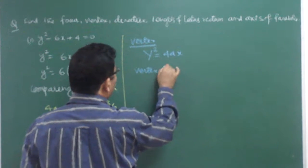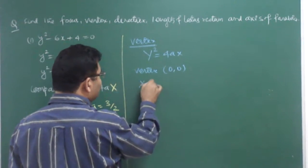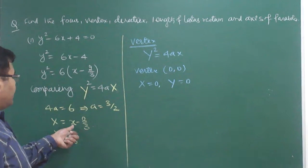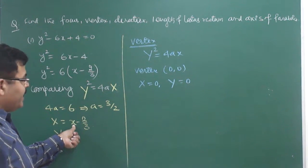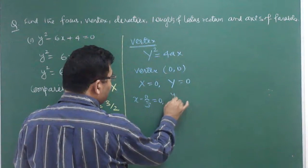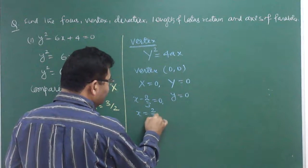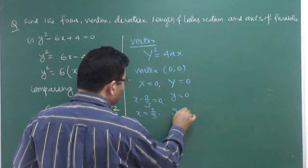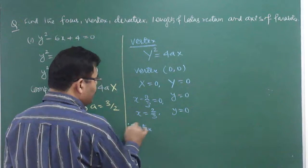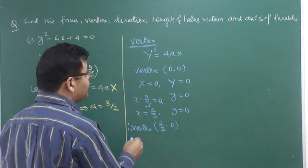For the parabola Y² = 4aX, the vertex is at (0, 0), meaning capital X = 0 and capital Y = 0. Since X = x - 2/3 = 0 and Y = y = 0, the real vertex is therefore at coordinates (2/3, 0).